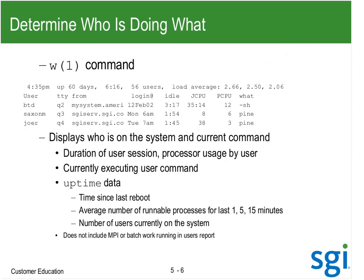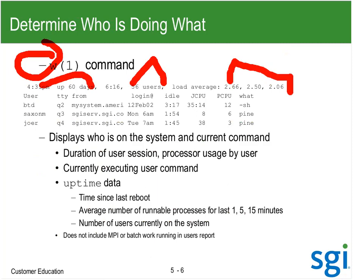Starting off with the W command — it shows me how long I've been up and how many users have come in through the login command, but that does not include PBS, batch, or MPI. We then have the load level: a 1-minute, 5-minute, 15-minute smoothed rolling average. The load level counts all the running, runnable, and sleeping-on-IO processes.